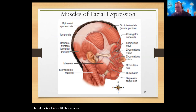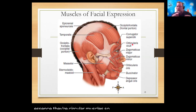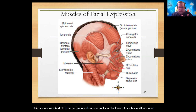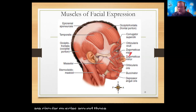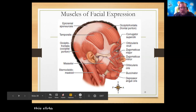Two orbicularis muscles are sphincter-type circular muscles. The orbicularis oculi surrounds the eye ('oculi' relating to eyes, as in binoculars), and the orbicularis oris surrounds the mouth ('oris' relating to oral). These are unusual throughout the body — circular sphincter muscles existing at specific facial openings. Their names convey both their circular nature and their location.